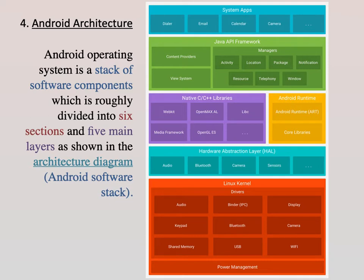Starting from the bottom, the first layer is the Linux kernel, then comes the Hardware Abstraction Layer, then Native C or C++ libraries, Android runtime — where both the Android runtime and libraries are in a single layer — then the Java API framework, and finally the system applications layer. We will look at each of these layers.